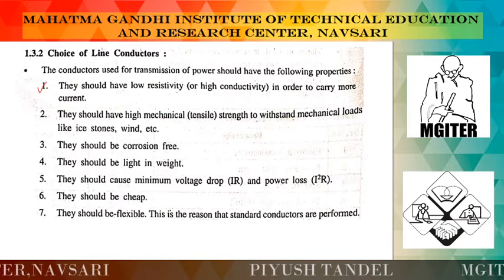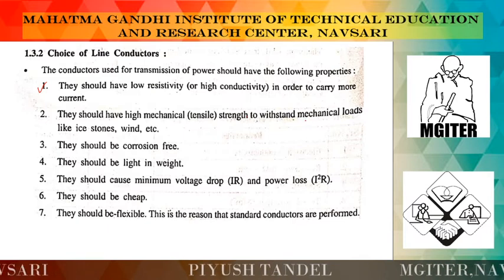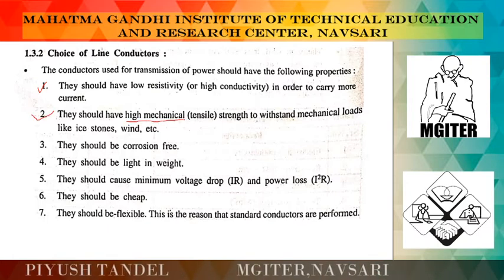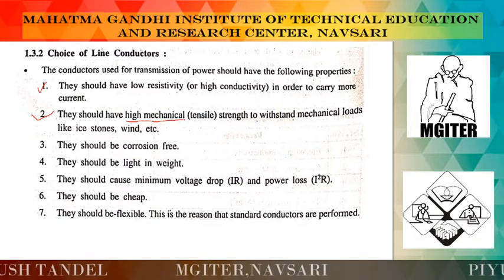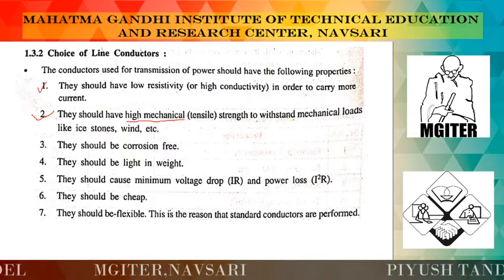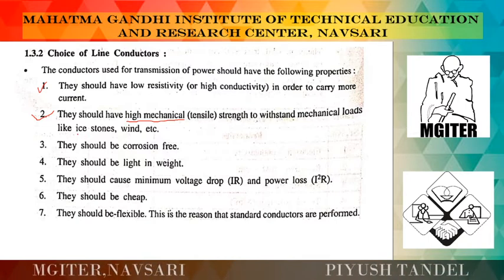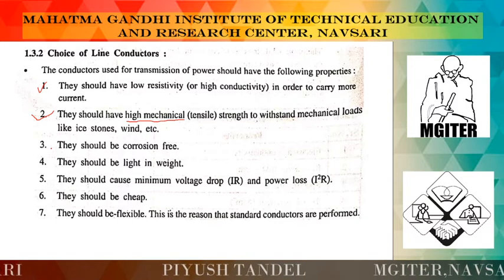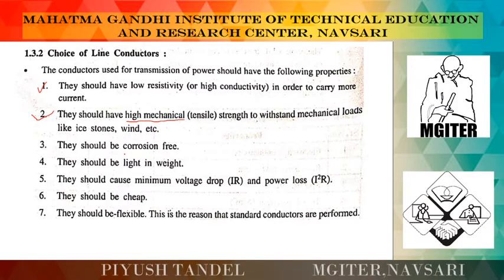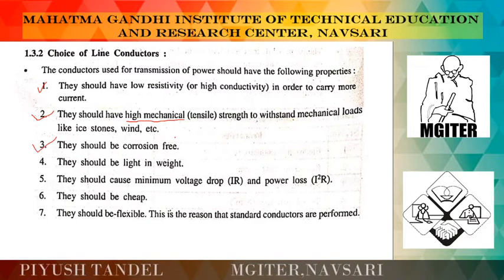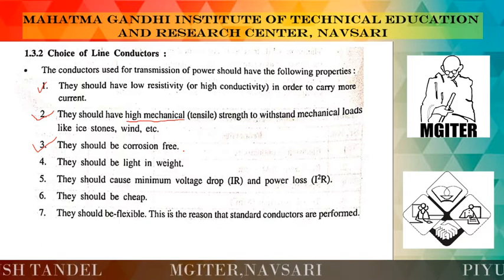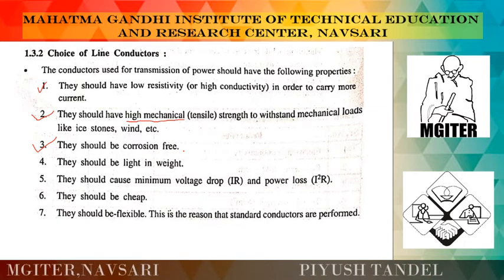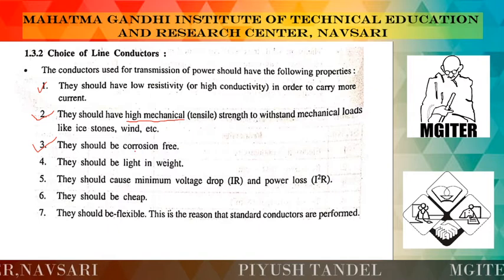Second, they should have high mechanical strength to withstand mechanical loads like ice, storms, and wind pressure. Conductors sag between two different poles, so they need sufficient mechanical strength to withstand ice that forms on the conductor or any kind of wind pressure. Next, they should be corrosion-free — no corrosion or seasonal corrosion effect. Due to different seasons, the conductor should not catch corrosion because if it does, the resistivity of the conductor increases, which is bad for current flow.